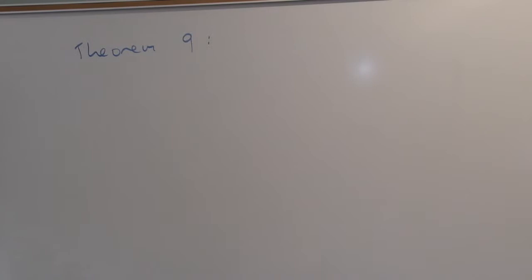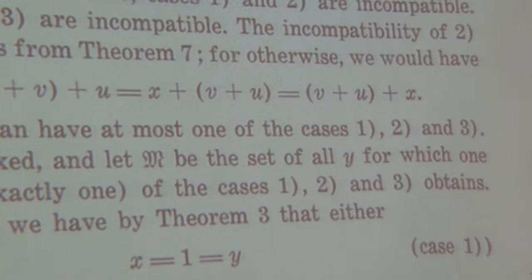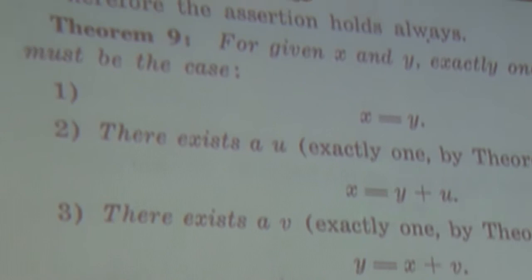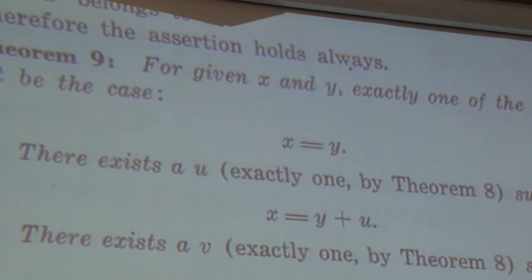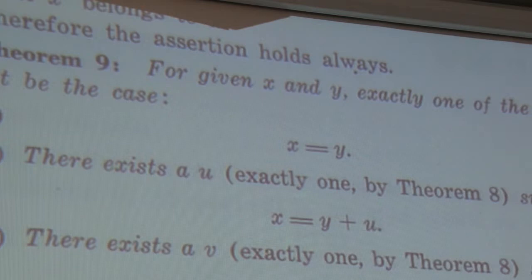So theorem 9 — it's really interesting. Sometimes in math the theorem is more important than the proof, and other times the proof is more important than the theorem. This is one of those cases where the theorem is much, much more important than the proof. The proof to this theorem is very unpleasant. There's a good chance you'll get stuck in the proof, and if that's the case, it's okay — it's sort of optional. I'm not really going to test you on this particular proof.